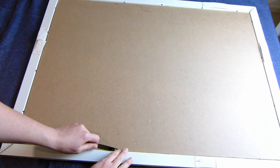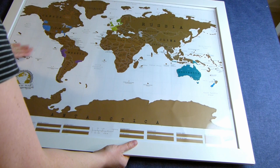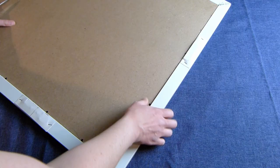Only do up a few of the backing holders then flip the frame over to make sure everything looks good. When you're happy, do up the rest. Give the front of your glass a clean and hang up your picture.